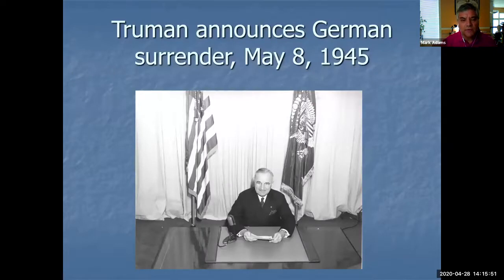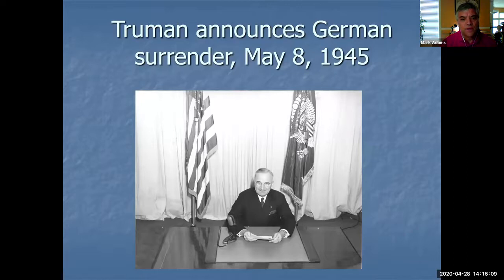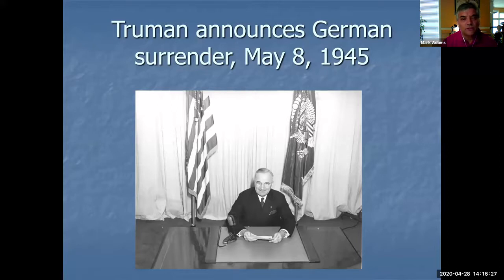By May the 8th — another significant date for President Truman, because it's his birthday, he turns 61 — he announces the surrender of Germany in the European theater of World War II. That's significant because Germany was one of the biggest enemies during the war. After D-Day on June 6, 1944, American and Allied troops had advanced on Germany from the west and Soviet forces from the east. The Soviet and American forces had shaken hands across the River Elbe, and now by May 8th on Truman's 61st birthday, he announces the Germans have surrendered.